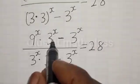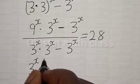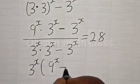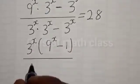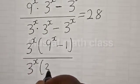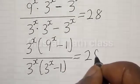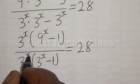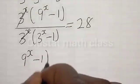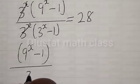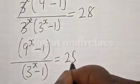Now from the numerator, 3 raised to the power s is common. We have 3 raised to the power s, into 9 raised to the power s minus 1, divided by the denominator where 3 raised to the power s is common. We have 3 raised to the power s into 3 raised to the power s minus 1, is equal to 28. Then the common factors cancel, leaving 9 raised to the power s minus 1, divided by 3 raised to the power s minus 1, is equal to 28.